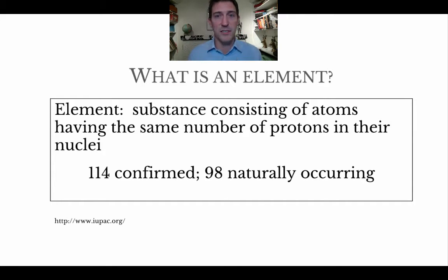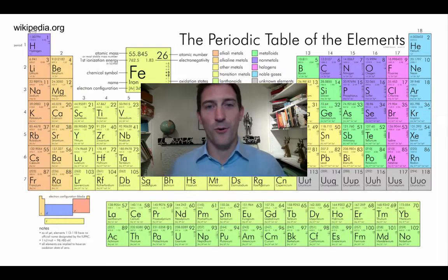There are 114 elements that scientists have found or made, and 98 of them are naturally occurring. That 98 number is always changing, as is the 114, as chemists and physicists start to develop or make new elements inside the lab, and astronomers and geologists are finding them out in the universe. If you want to keep up to date on it, follow iupac.org.